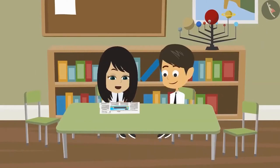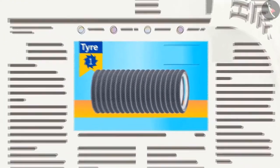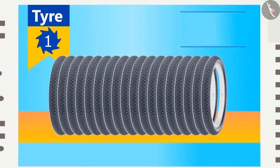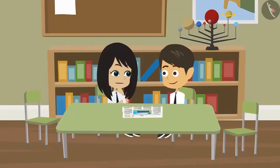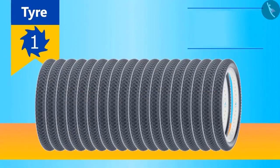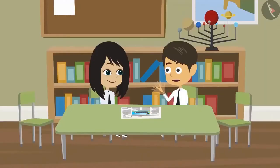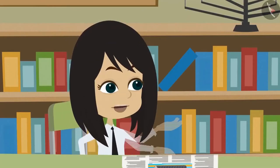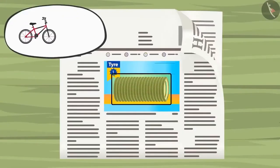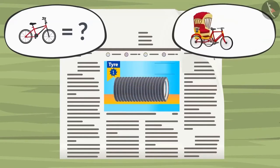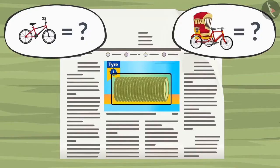Look Reyanj, there are so many tyres printed on this newspaper. This is definitely an advertisement of a tyre. Maybe, but can you tell me which vehicle these tyres belong to? Yes, this is a bicycle tyre. But it can also be a tyre of a rickshaw. If these are bicycle tyres, can you tell me how many bicycles do they belong to? And if these are rickshaw tyres, how many rickshaws do they belong to?